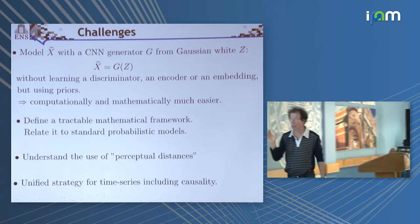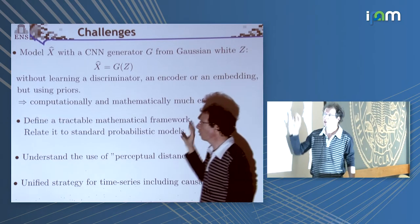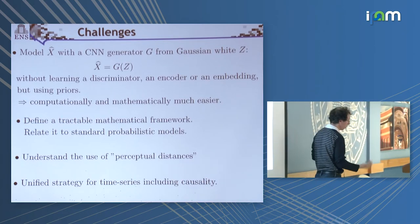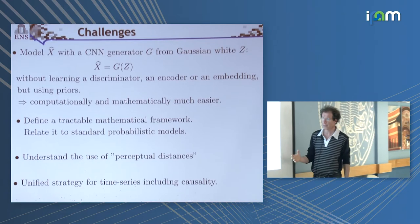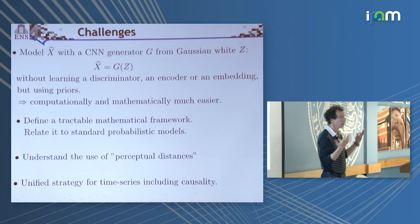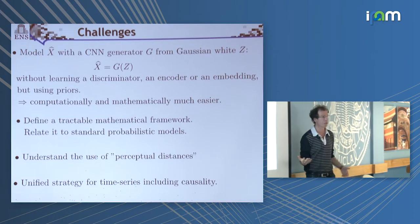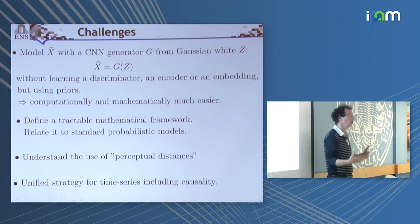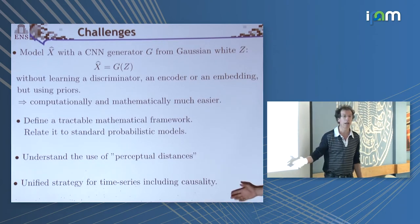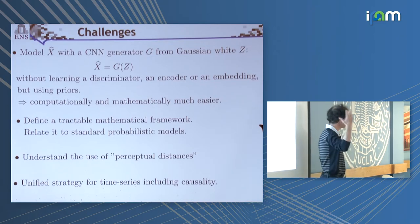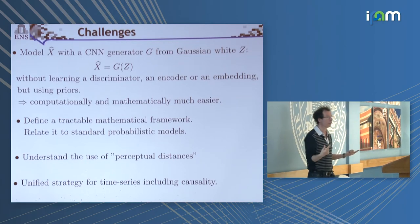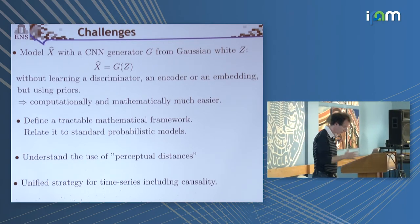There are several elements attached to this. We want to define a tractable mathematical framework, but we'd like to relate it to past work in math on probabilistic models. This notion of perceptual distance is not very natural — after all, you don't care about perception if you are doing physics; the only thing you care about is reproducing a good approximation of your probability distribution. And we'd like to have the same kind of architecture to produce both images and time series — incorporate causality into it and get exactly the same kind of results.